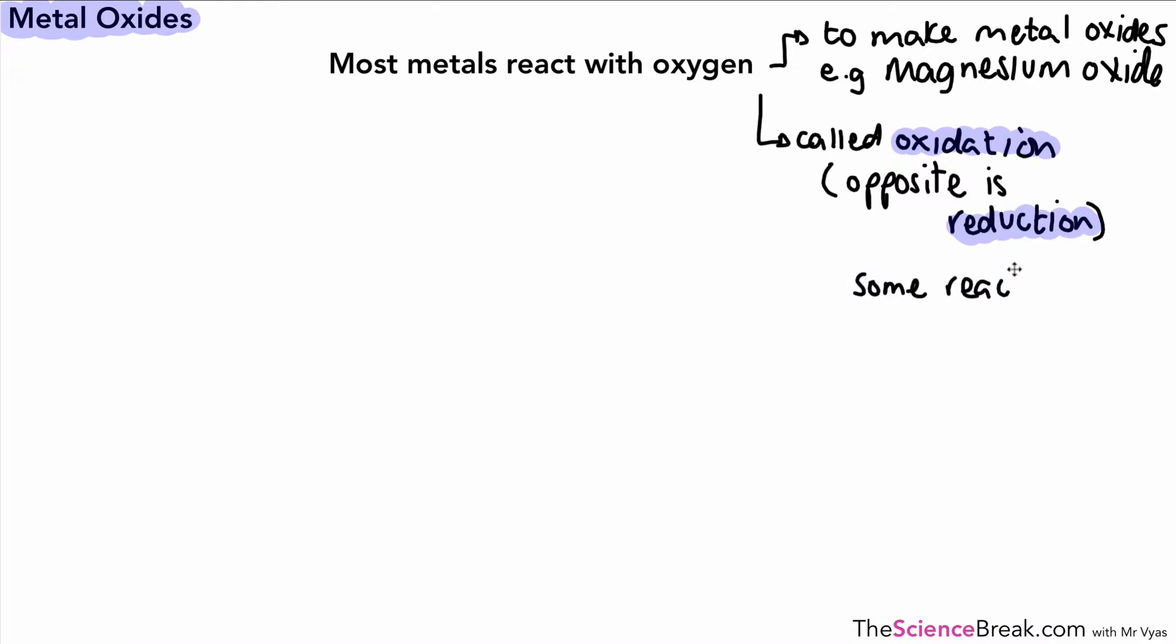Some metals react quickly with oxygen, some react slowly. One example that reacts very quickly is lithium. We've had a look at this before, and you may have seen this in class. Your teacher may have shown you this, but if not, we can have a quick revisit.